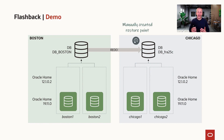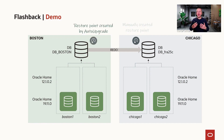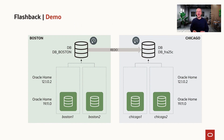Before I did anything, I manually created a restore point on the standby database. And because I used Auto Upgrade to do the database upgrade, it created a guaranteed restore point for me automatically as part of the deploy process. But now we find out that there is an issue — we need to flashback the entire environment to the 12.102 state before we did any changes at all.